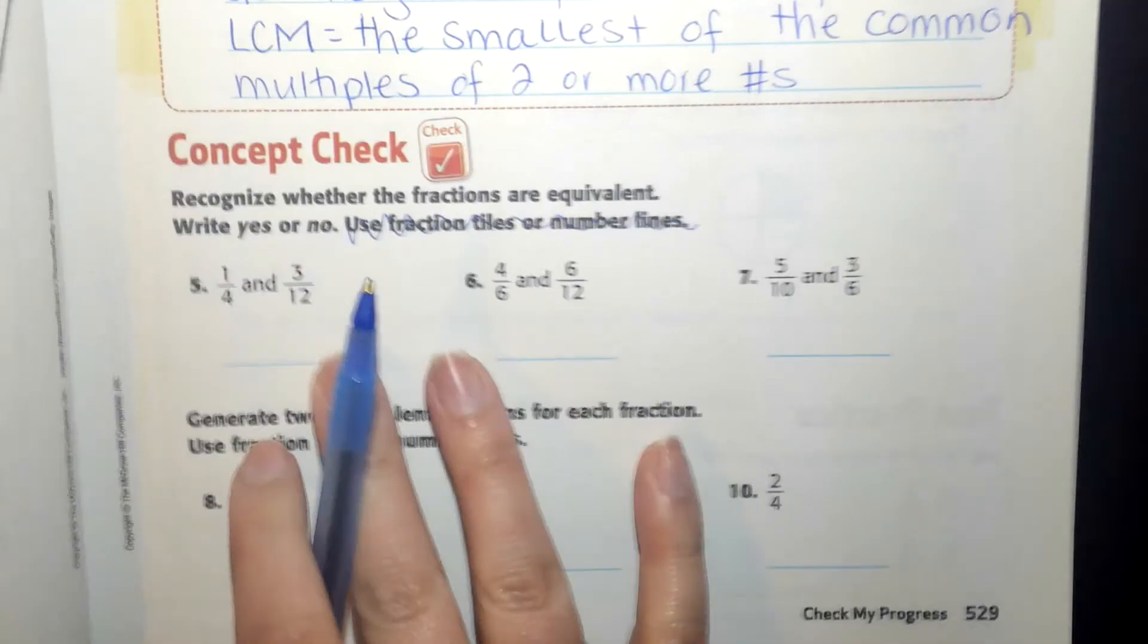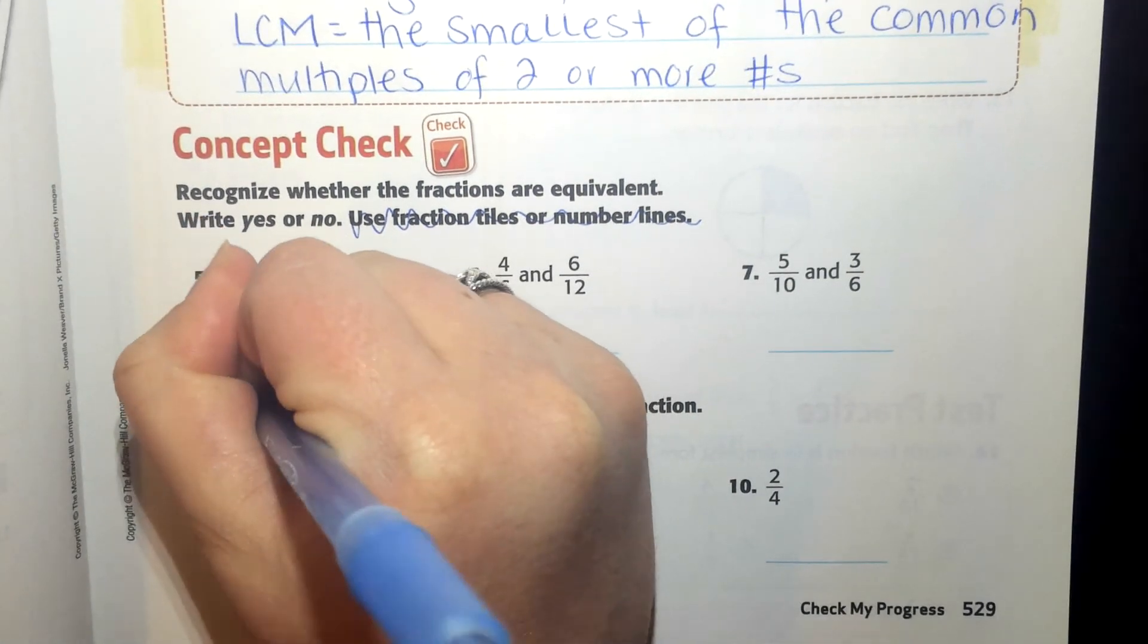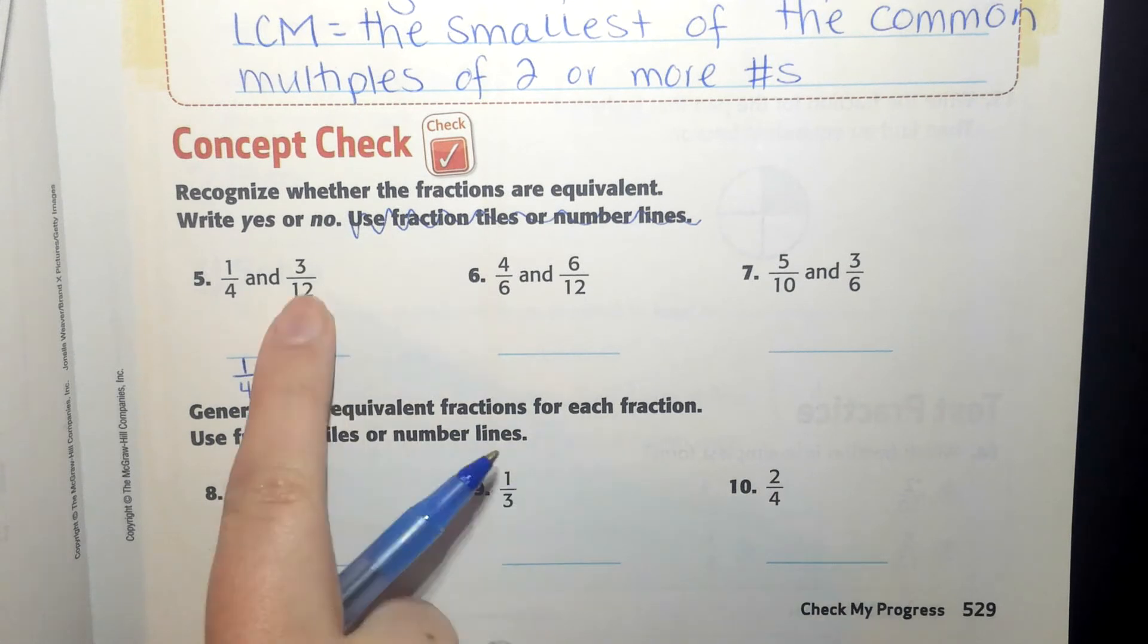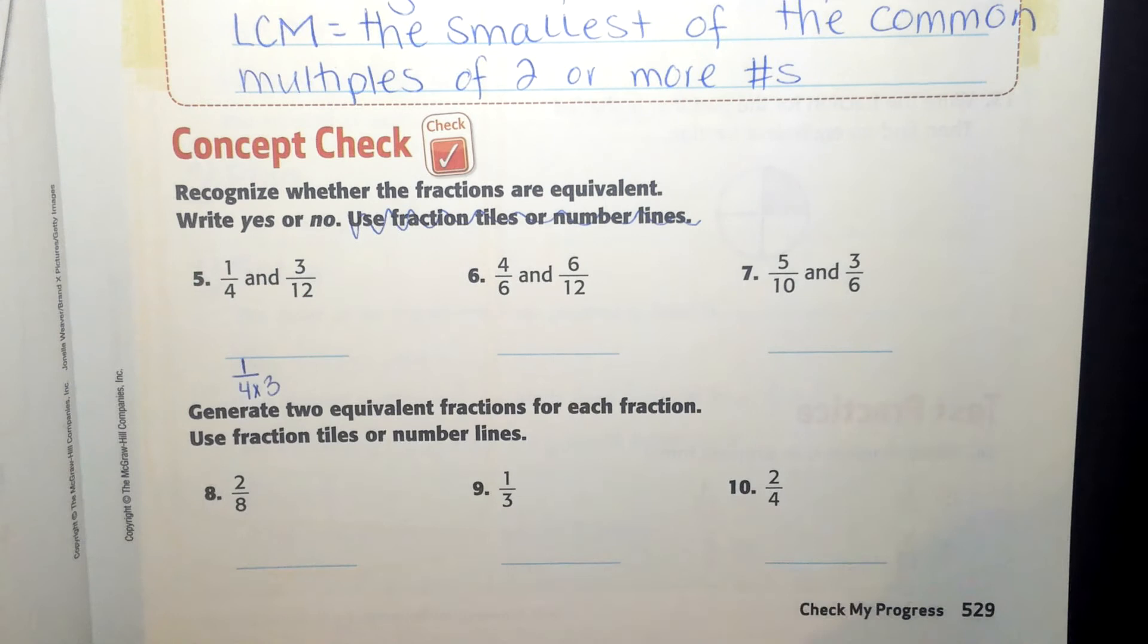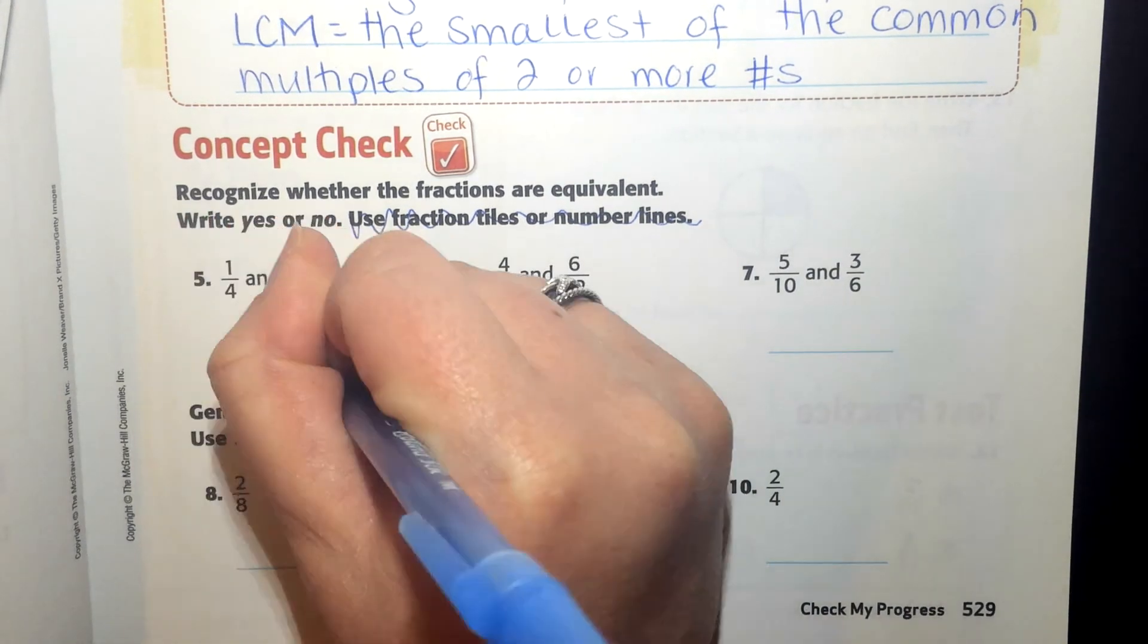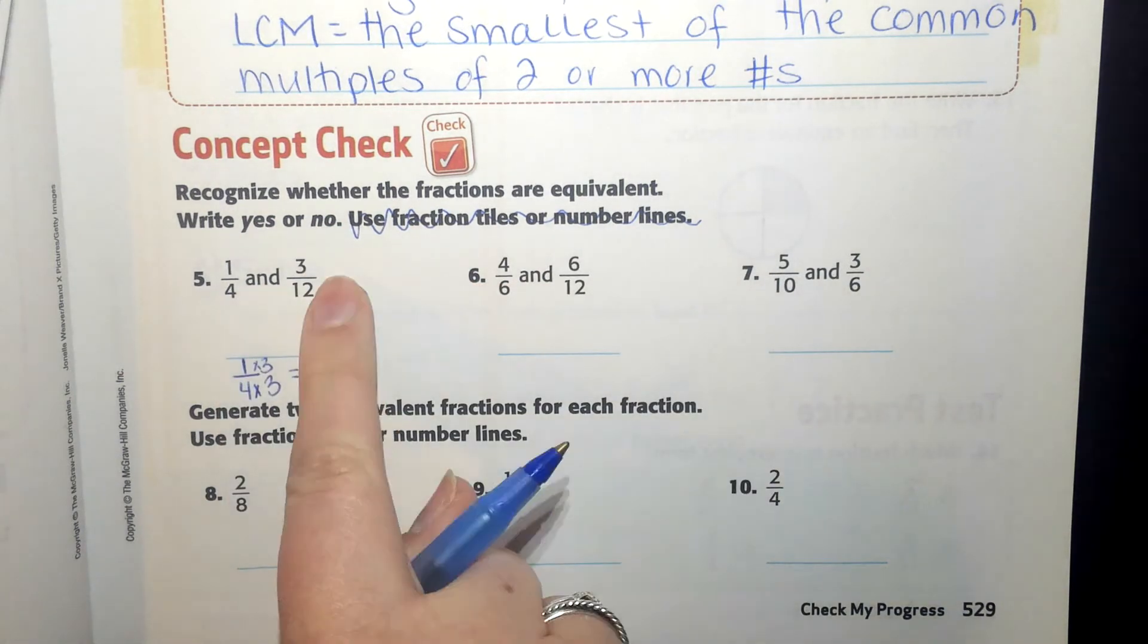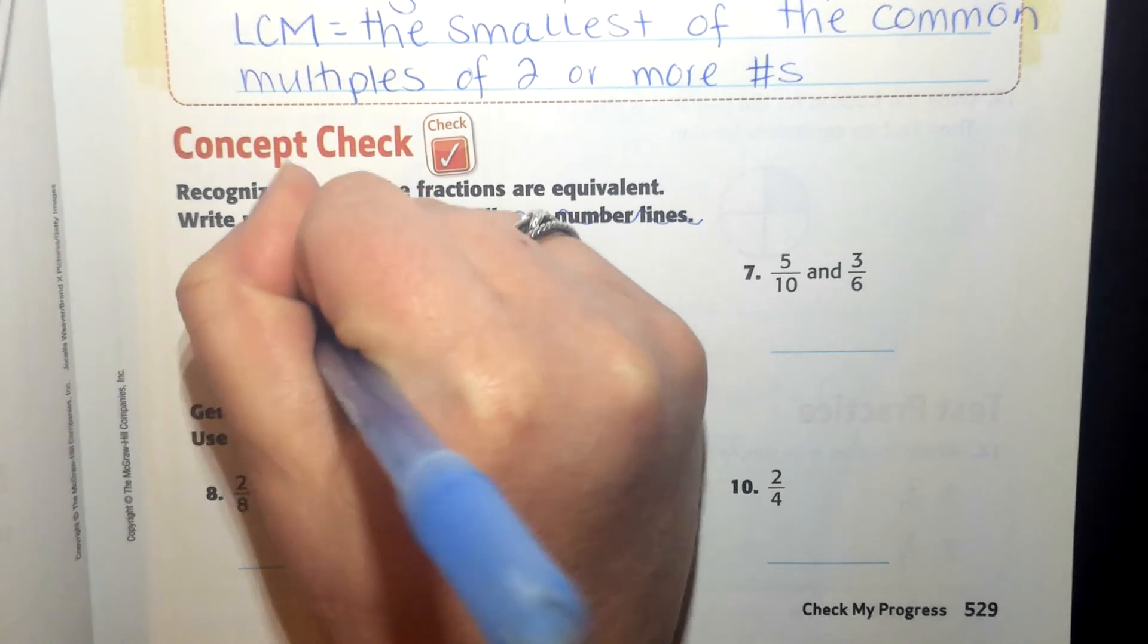They're asking me if one-fourth and three-twelfths are equivalent. The way that I'm going to find that out is I'm going to make sure that they have a common denominator. So I'm going to write one-fourth because I know if I multiply four by three, I get 12, which means I'm going to have a common denominator. Whatever I do to the bottom, I have to do to the top. So one-fourth is equivalent to three-twelfths. Look at that. So I'm going to write yes here.